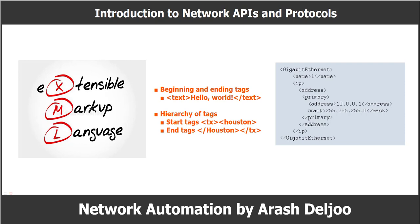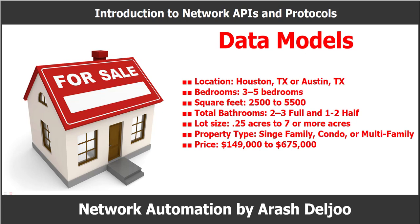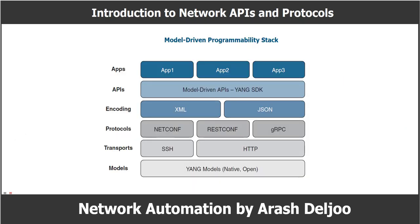A data model can be thought of as a well-understood and agreed-upon way of describing something. A data model describes a controlled set of data using well-defined parameters to standardize the representation of that data. For example, a possible data model for houses for sale could include: location, number of bedrooms, square footage, total bathrooms, lot size, property type, and price.